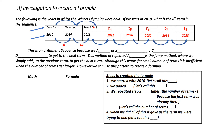Our eighth term in the sequence would be 2038. This is an arithmetic sequence because we are adding a common difference to get to the next term. This method of repeated adding I call the jump method, where we add or subtract from the previous term to get to the next term. This can work on small numbers, but it's really quite ineffective when the number of terms gets larger — but we can use this to create our formula.